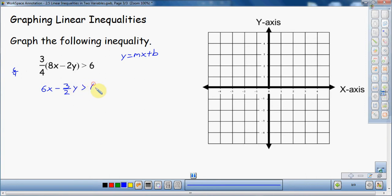So it is greater than 6. So I distributed the 3 fourths into the parentheses and got this. So my goal is again to get the y by itself. To get y by itself, this 6x needs to move to the other side. So I'm going to subtract 6x over to the other side. And then now, this one gets a little tricky, I'm going to multiply everything times negative 2 thirds. So actually I'm going to show this, this is kind of a tricky step here.